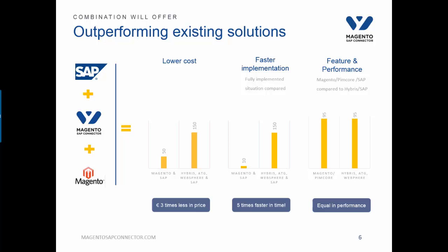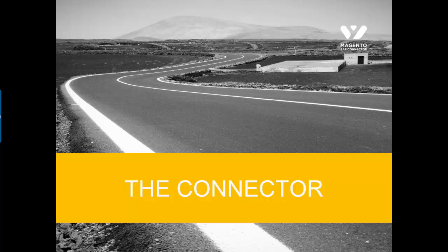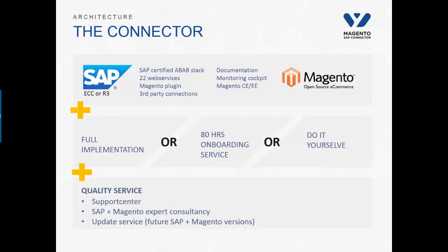Let's zoom in to the architecture of the connector. At the top layer we have the enterprise connector connected to SAP ECC or R3 — it is an SAP certified ABAP stack fully implemented in your SAP environment. It includes 22 web services which enable you to two-way connect your business from Magento to SAP and vice versa. It contains a Magento plugin and you are able to connect third-party services as well. Everything is well documented, and a monitoring service shows you on one screen whether all services are up and running and whether data quality is 100%. This connector works on both the community edition and the enterprise edition of Magento.